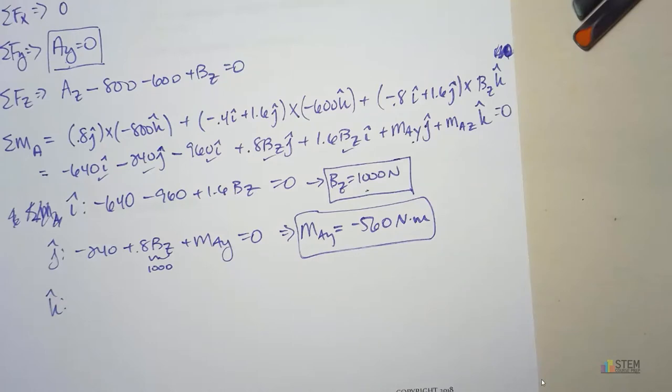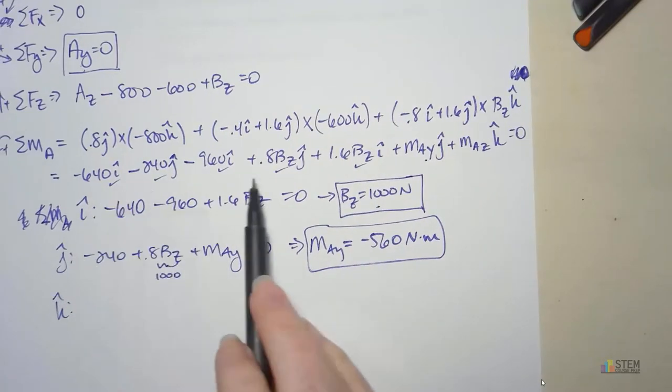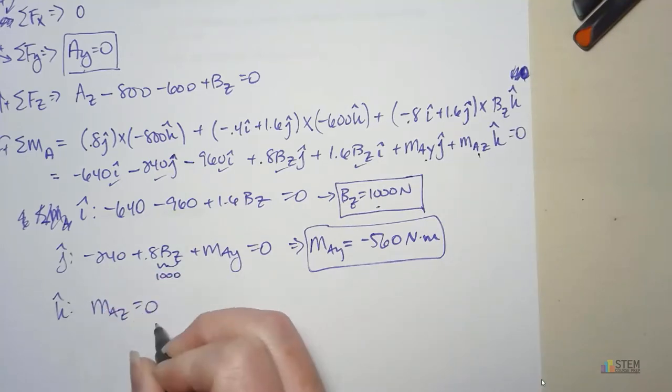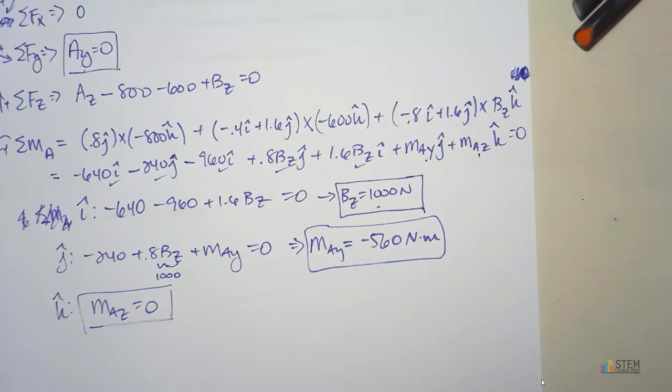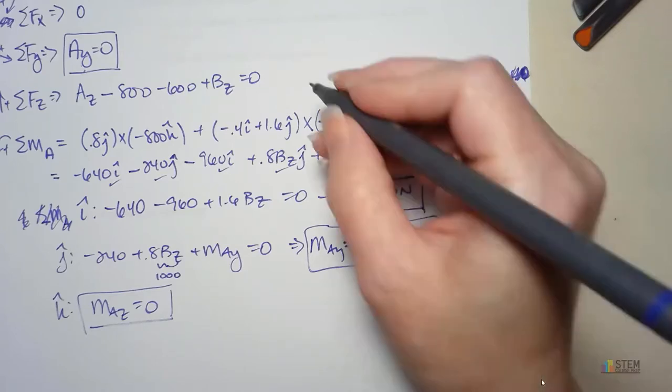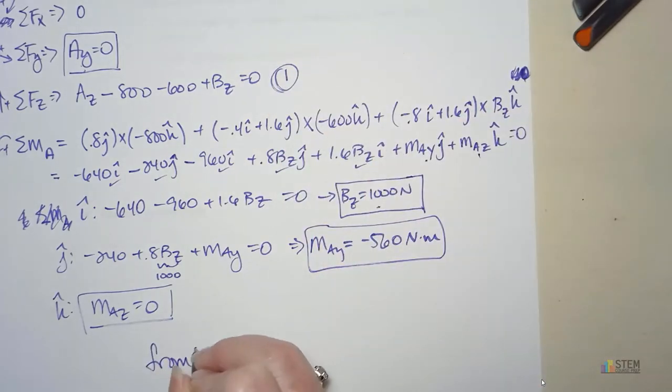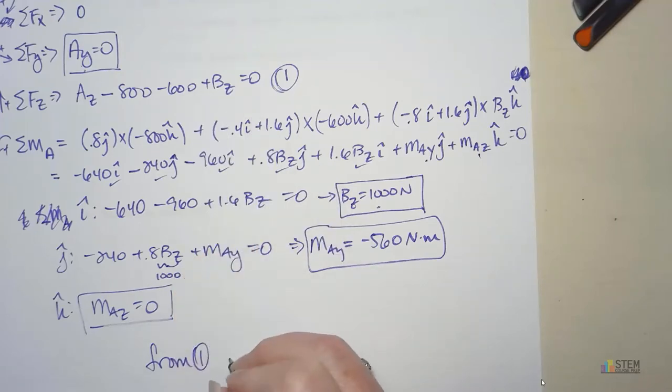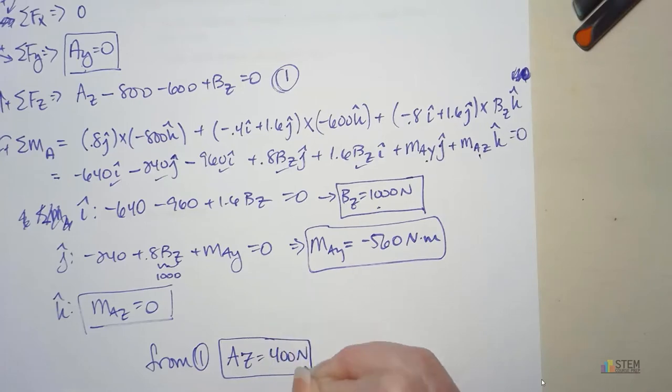And lastly, let's do K. If we look at the K terms, we have MAZ. That's all we got. So MAZ is going to be 0. Now we've got those things, so let's see what else we're missing. We've got AY, the two moments, we've got BZ. Last thing we're missing is AZ. If we call this equation 1, from that equation we need to plug in BZ. And then you can solve and get that AZ is 400 Newtons. It's positive, so that means going up is the correct direction.